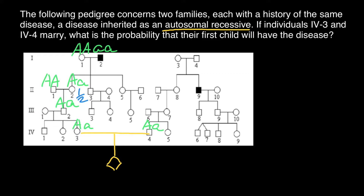We assume this female is phenotypically and genotypically normal, with genotype capital A, capital A. What is the probability that their daughter would inherit the recessive allele from her father's side? From the mother's side this female can inherit only the dominant allele, but from the father's side she can inherit the dominant allele or the recessive allele. So the probability is one half to inherit the recessive allele. And the probability for the child of this couple to get the recessive allele from the mother's side is again one half. So: one half times one half is one quarter, times one half is one eighth. Probability to get a recessive allele from the mother's side is one eighth.